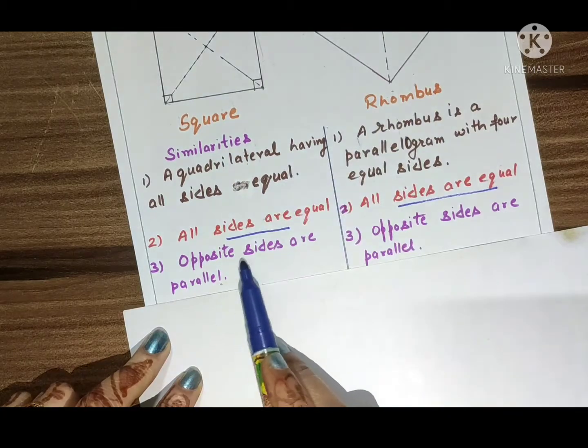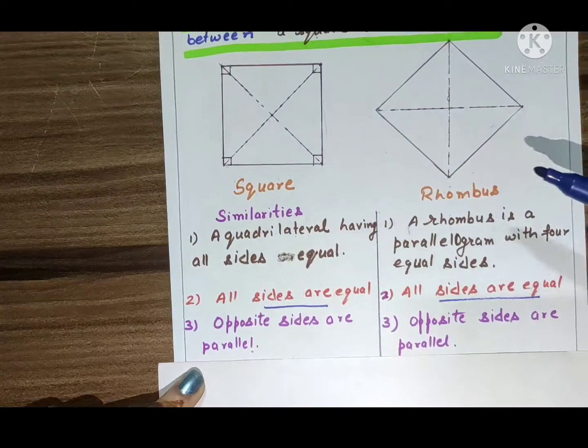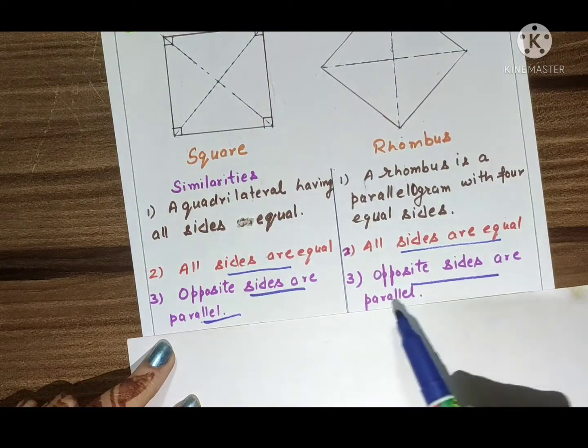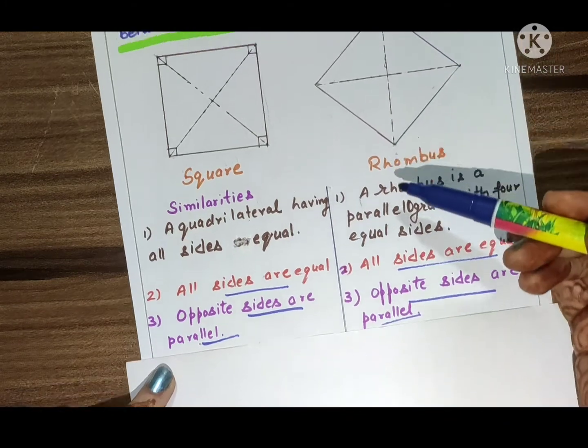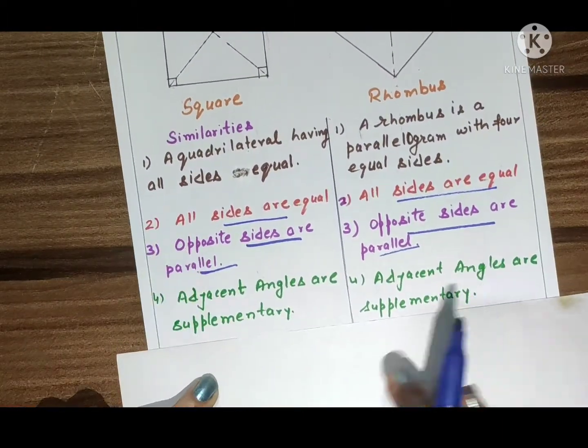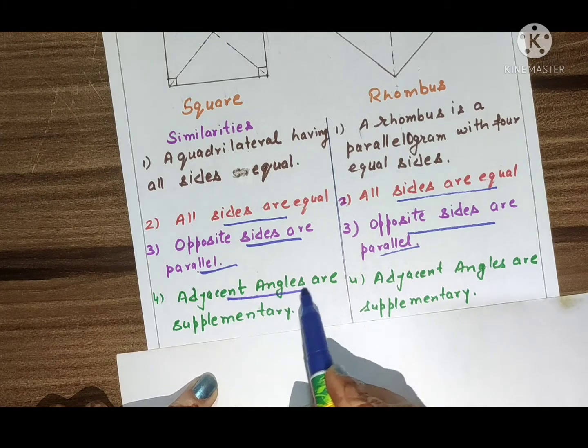In square, opposite sides are parallel. In rhombus, opposite sides are parallel. Next, fourth point: adjacent angles are supplementary. In square, adjacent angles are supplementary, and in rhombus, adjacent angles are supplementary.